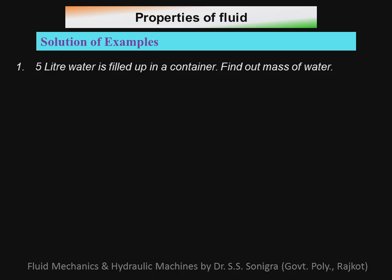Example number one: five liters of water is filled in a container — find the mass of water. For water, we know one liter equals one kilogram, so obviously five liters equals five kilograms. That is the answer to this problem.